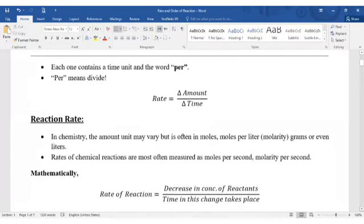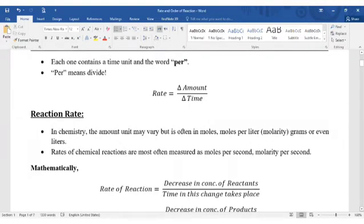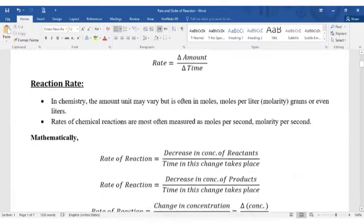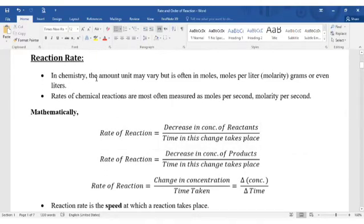So first of all, before starting the topic, one small thing. Each time we order rates, every time unit lasts for each time, and we use the word 'per', which means usually divide. Rate is equal to change in amount per change in time. Per means divide. So first of all, what is reaction rate? In reaction rate in chemistry, we know that the amount of unit is usually in moles, or moles per liter, that is molarity. So rates of chemical reactions are most often measured as moles per second or molarity per second.